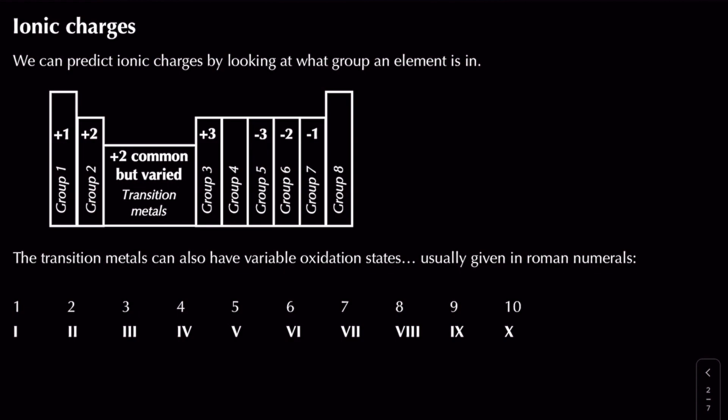Starting off looking at our simple ions: if we're looking at individual atoms being turned into ions, we know between groups 1 and 3 we form positively charged ions, and between groups 5 and 6 we form negatively charged ions. You might have come across this before at GCSE where you refer to the positive ions as cations and the negative ions as anions.